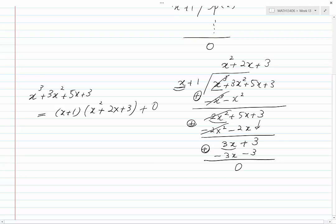Therefore, we've been able to factor our polynomial. Now our equation was x cubed plus 3x squared plus 5x plus 3, equal to 0.